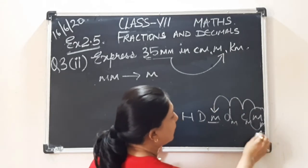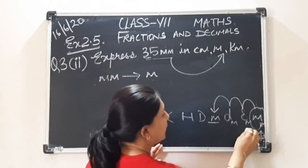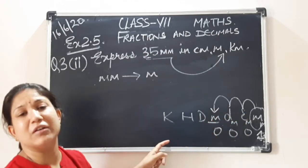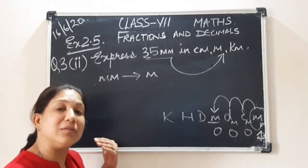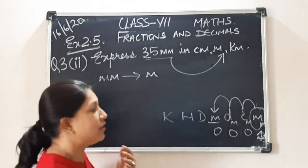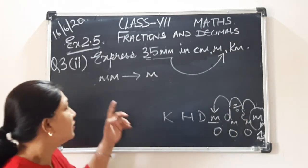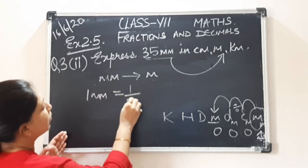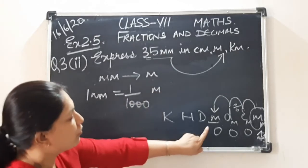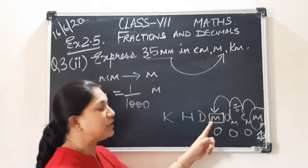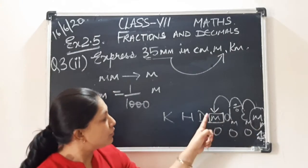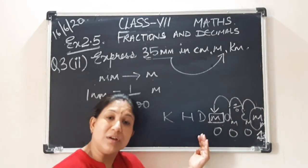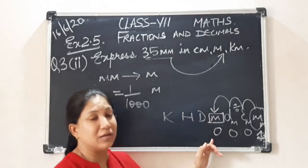So we started from one. And how many houses see? One. This is two. This is three jumps. In which direction we have moved? Towards the backward direction, that is left hand side. So what do we do? We divide. Therefore it will become one millimeter equal to one upon thousand meters. Where we have reached? We have reached meters. But to reach meters, we have moved towards the left hand side. So we are dividing. Clear?